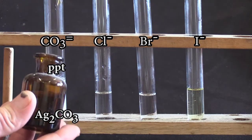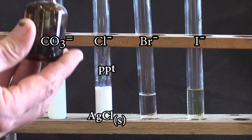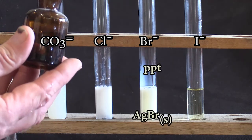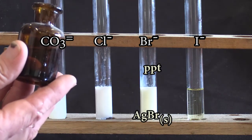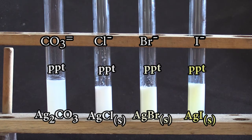Similarly with the halides: silver chloride precipitate, silver bromide, which is slightly off-white, and silver iodide, which is the yellowest of the three.